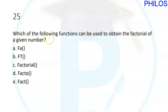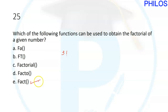Question twenty-five: which function can be used to obtain the factorial of a given number? Factorial means, for example, 3! = 3×2×1 = 6. In Excel, the factorial function is FACT. Enter =FACT(3), close the bracket, click enter, and it returns 6. The answer is FACT.